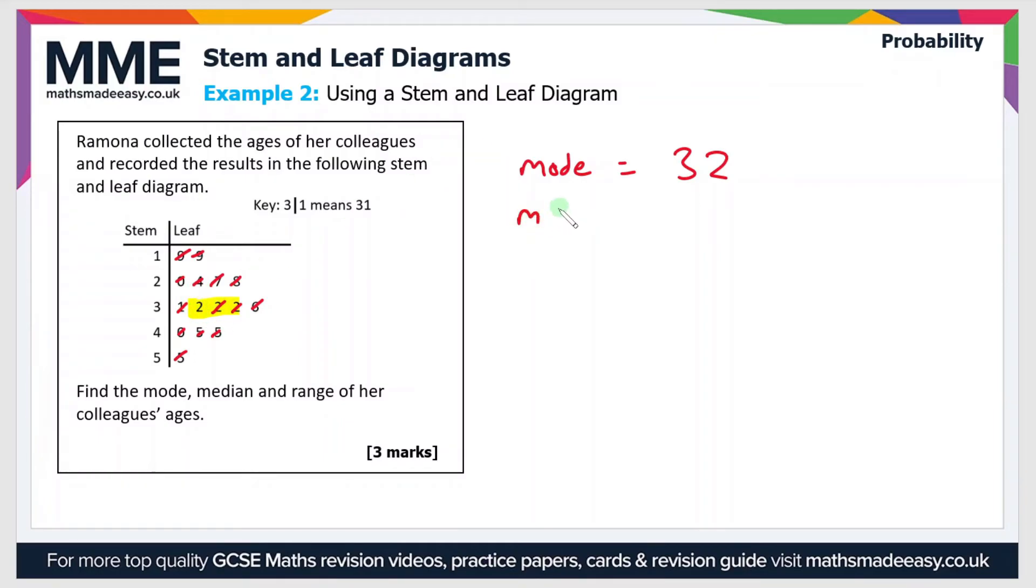So finally then the range. Now the range is the largest value minus the smallest value. So if I just rub out these markings you can see that the largest value is 55 and the smallest value is 19. So that gives us a range of 36. Now all of these three is all you would need to do to get all three marks in this question.